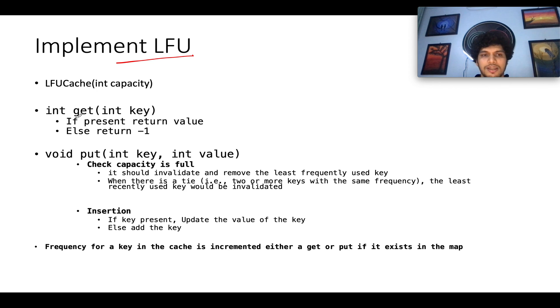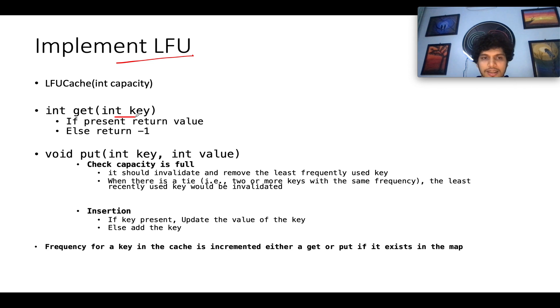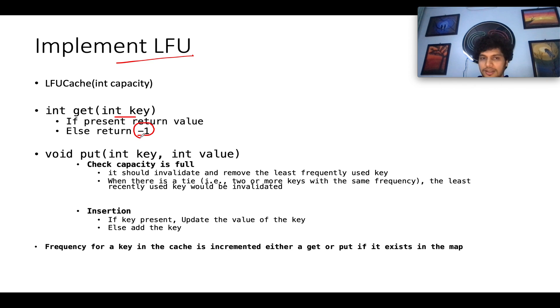The next operation is a get operation, which simply says you have passed a key and you need to return the corresponding value for that key. In case the key is not part of your LFU cache, you need to return minus one in those cases.